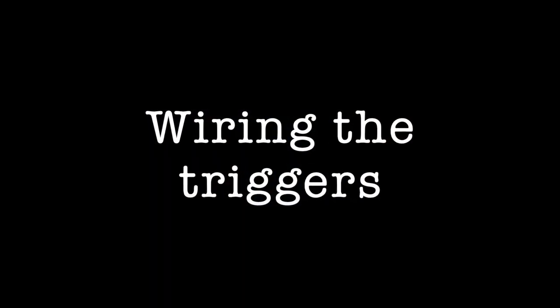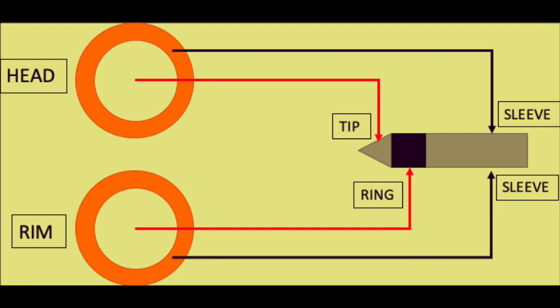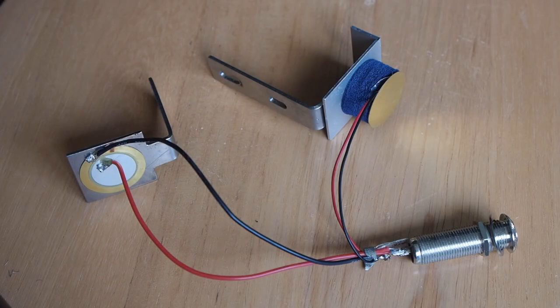I'm now going to talk about wiring the triggers. With 2box, the convention is that the red wire from the head trigger goes to the tip, the red wire from the rim trigger goes to the ring, and both black wires go to the sleeve connection.